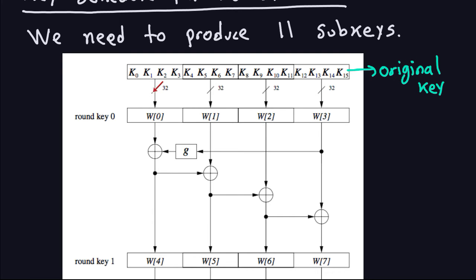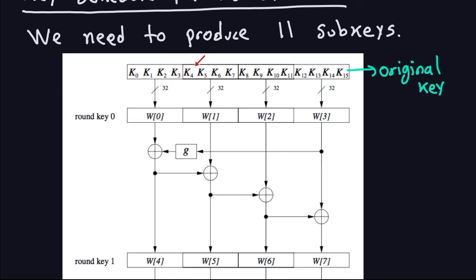The arrows here represent 32 bits going through. Once I take my 128 bits, I look at it in terms of bytes — 16 bytes — and I take sets of 4. So I take K0, K1, K2, and K3, giving 32 bits (8 times 4). Exactly the same for the next block: a block of 4 bytes, again 32 bits. Similar for K8 through K11 and K12 to K15 — these are 32-bit blocks, each of these four blocks.